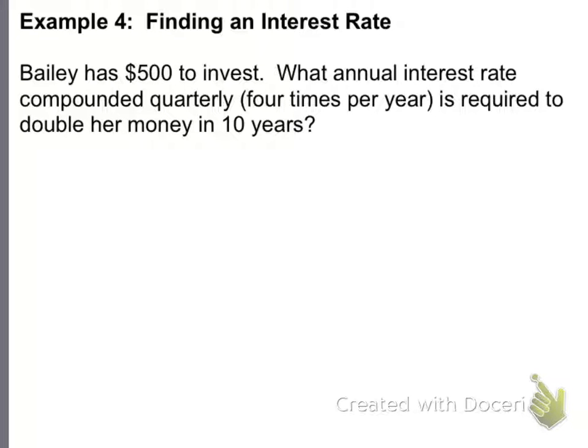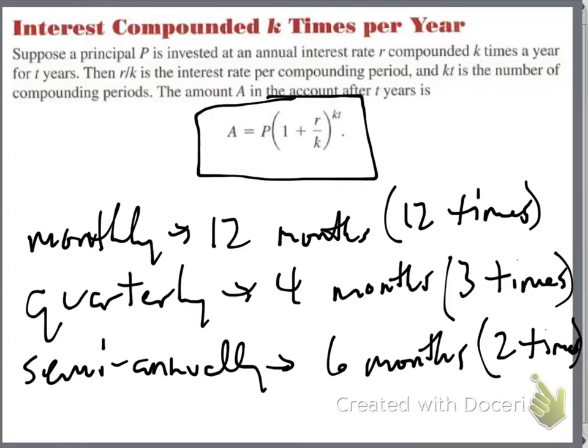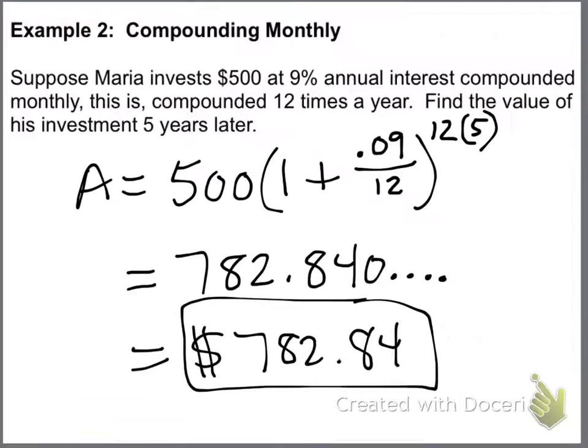Now, here's a question. Bailey has $500 to invest. What annual interest rate, compounded quarterly, four times per year, is required to double her money in 10 years? By the way, I think I screwed up. Quarterly is three months, which means you're compounding four times. It's the last section of calendar year 2016, boys and girls. I'm allowed a few mistakes.